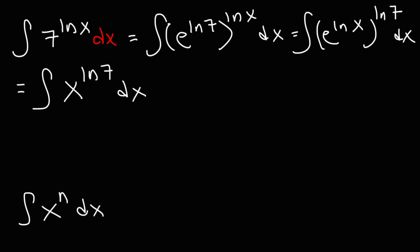The antiderivative of x raised to the n, a variable raised to a constant, is going to be equal to x raised to the n plus 1 divided by n plus 1 plus c, the constant of integration.